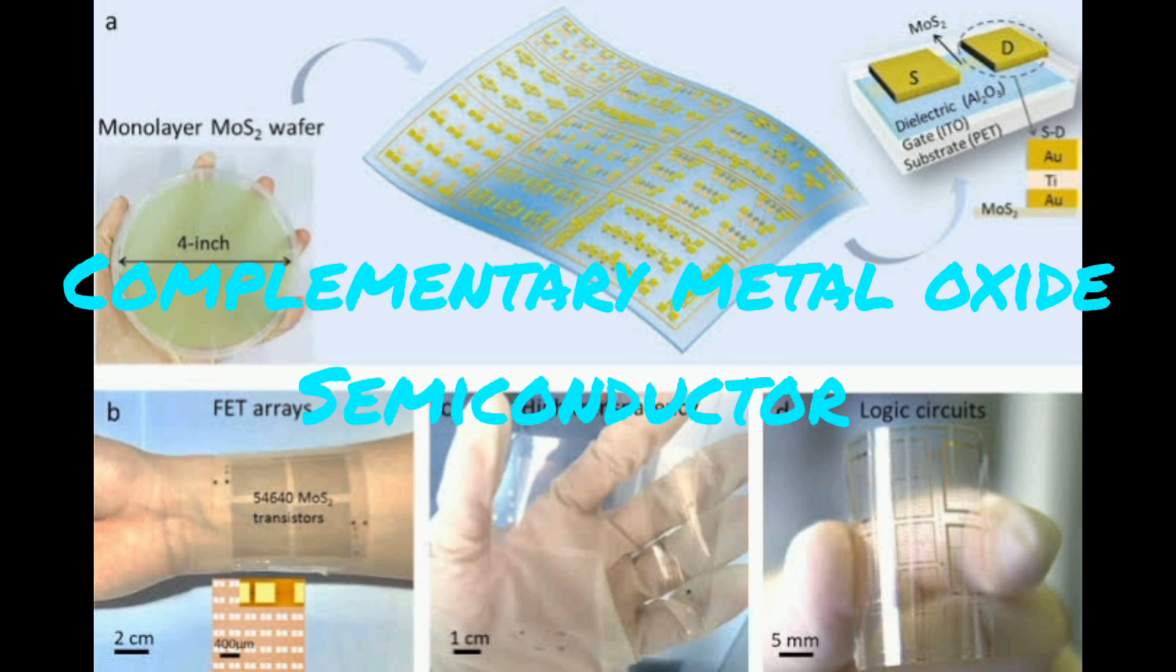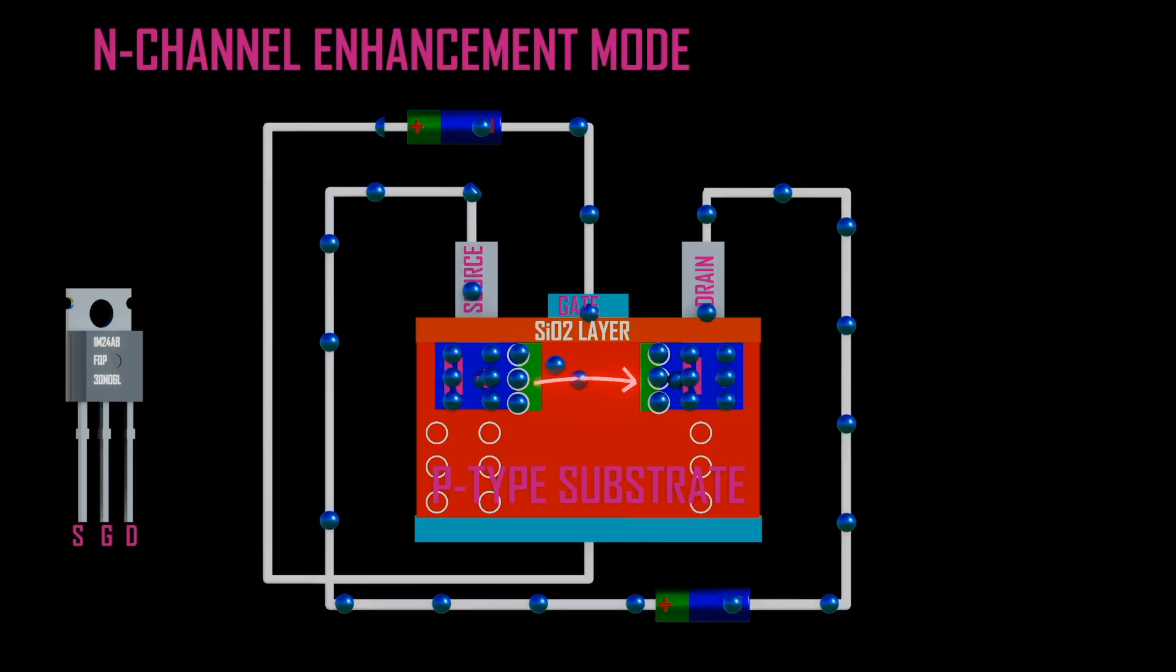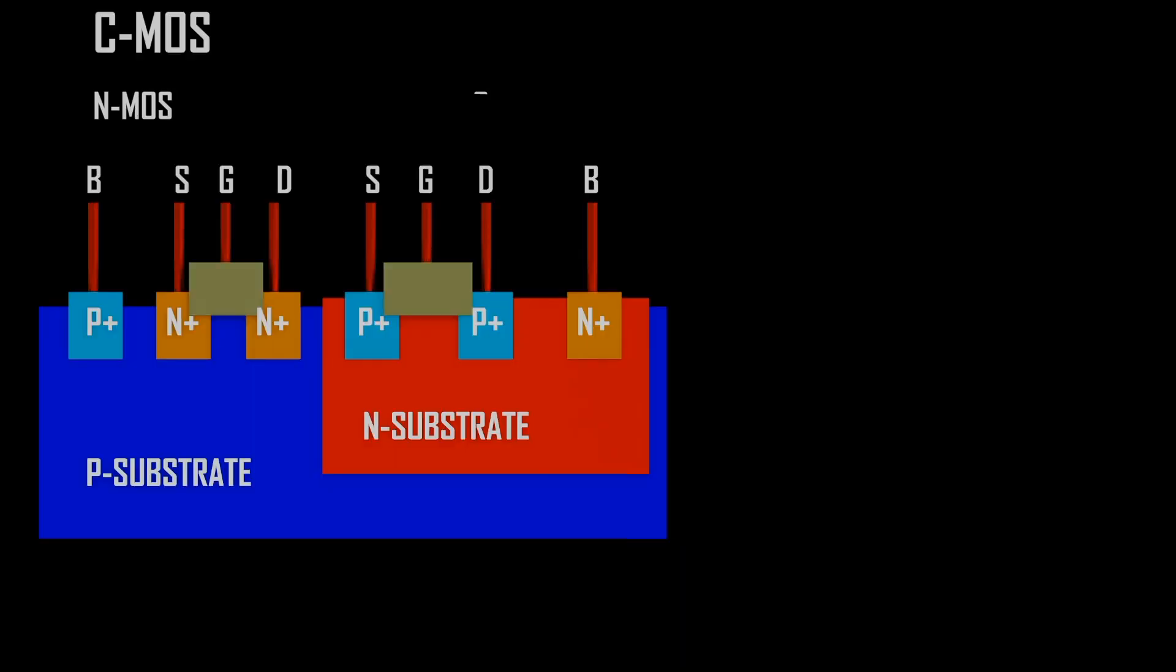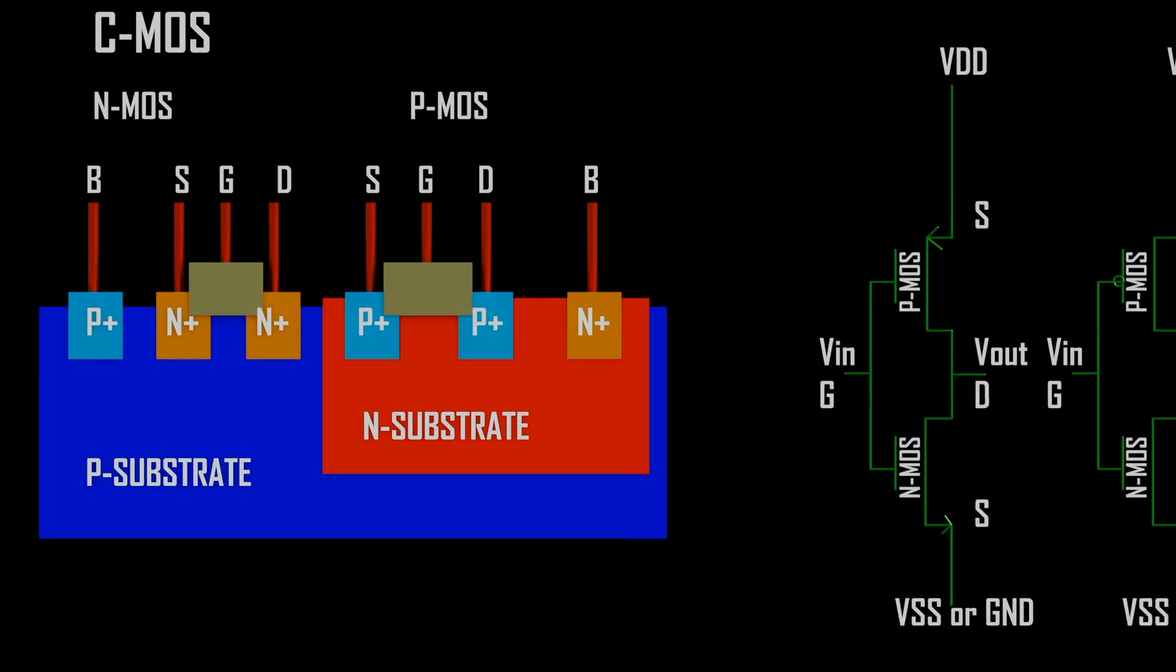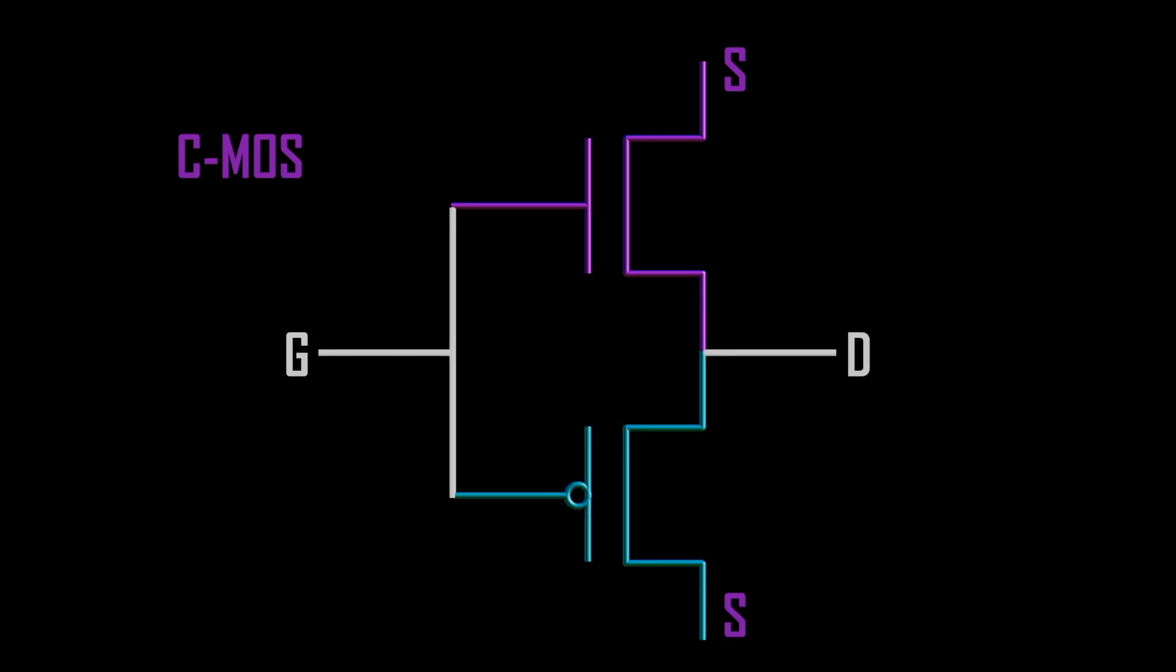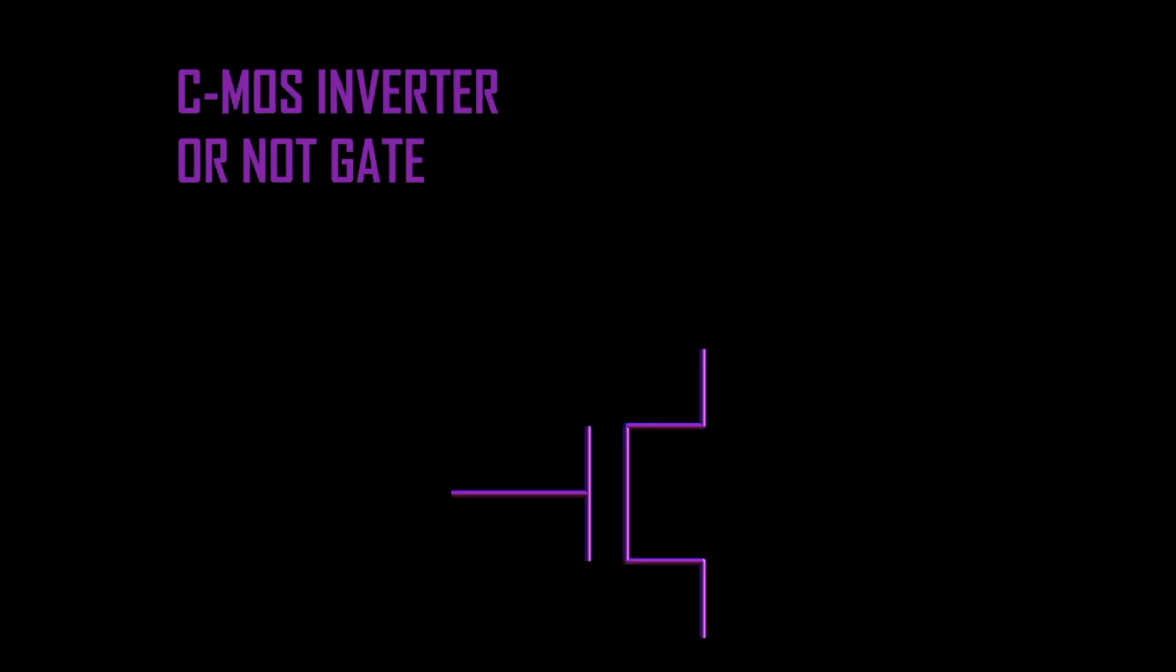CMOS is complementary metal oxide semiconductor. MOSFETs exist either in NMOS or PMOS, and when they are combined they form complementary metal oxide semiconductor CMOS. NMOS and PMOS symbols are shown. Combining N and PMOS symbols is shown, which can be used as an inverter.